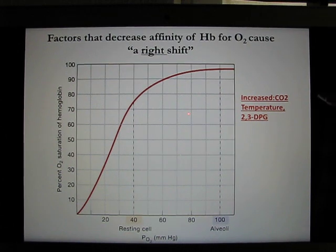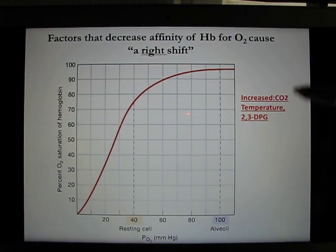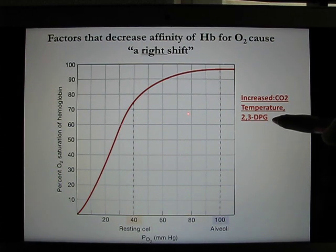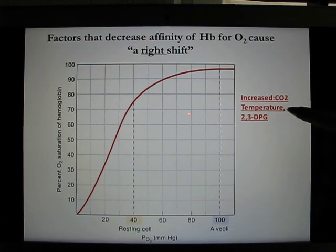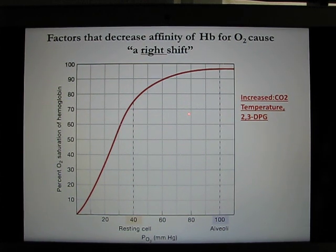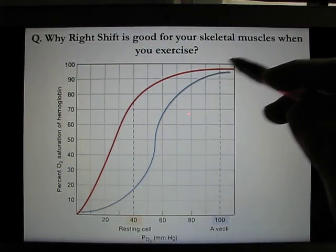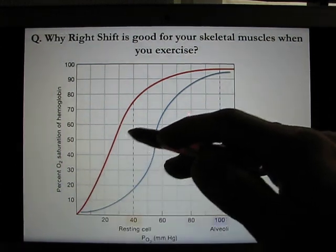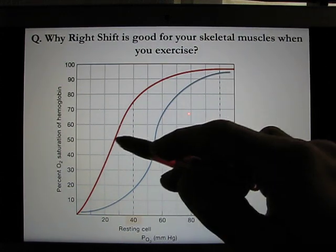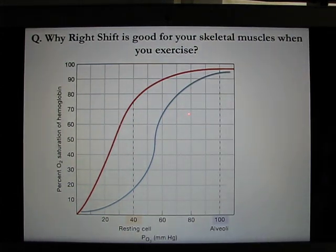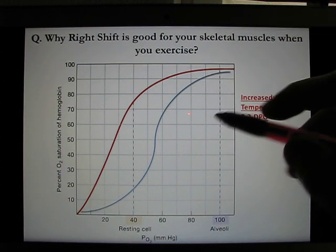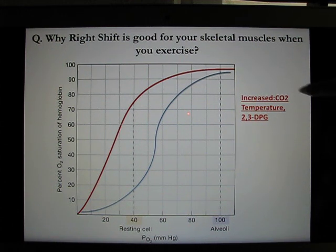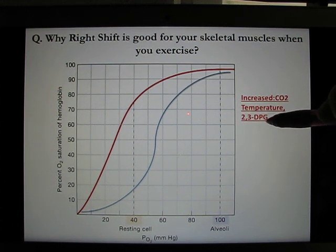In certain situations, you can cause a right shift of the saturation curve. The factors that cause the right shift are: increased CO2, increased body temperature, and increased 2,3-DPG, which is a metabolite produced by the body. This red line represents the right shift in an exaggerated way — normally the right shift is a little smaller.